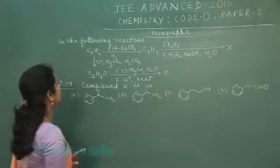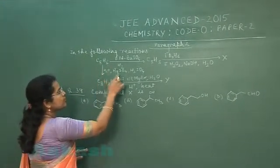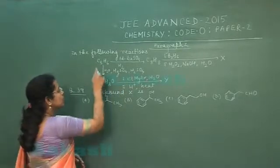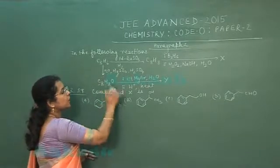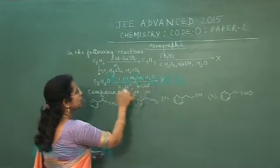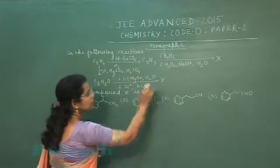When C8H6 is treated with water in presence of HgSO4 and H2SO4, it produces a compound of formula C8H8O which upon reaction with ethyl magnesium bromide in water, second step acidic medium heating, product obtained is Y.